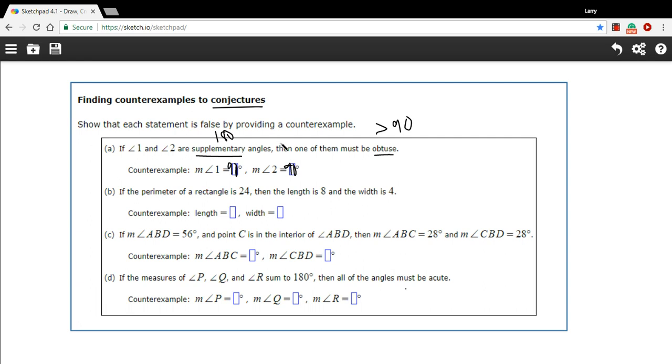Let's try B. It says if the perimeter of a rectangle is 24, then the length is 8 and the width is 4. So if you have a perimeter of 24, then the length has to be 8 and the width has to be 4, says this statement. Well that's silly, we know we can make all sorts of shapes of rectangles.